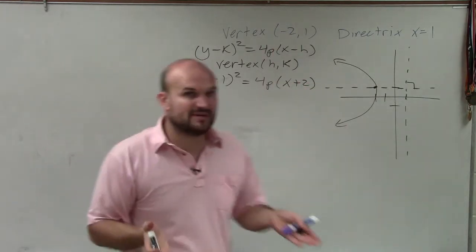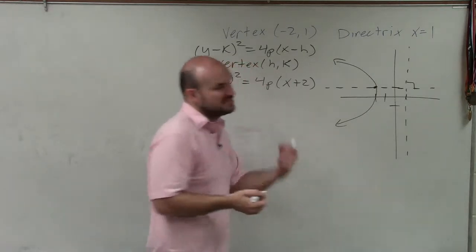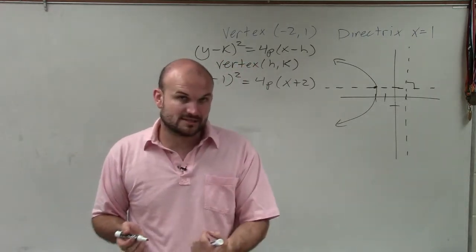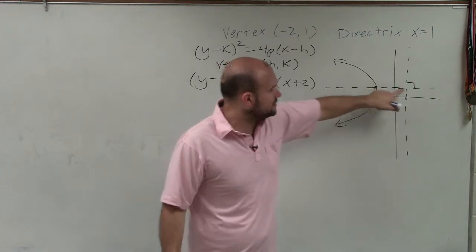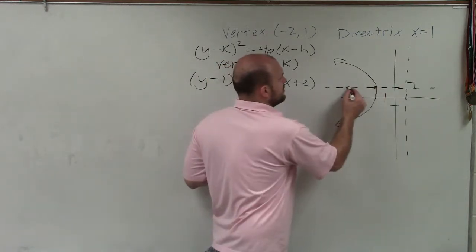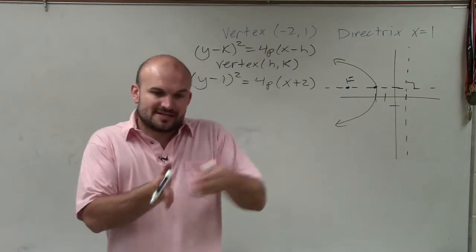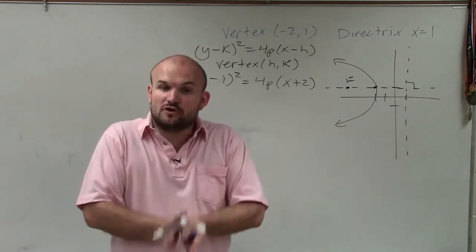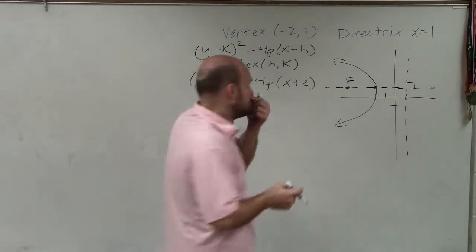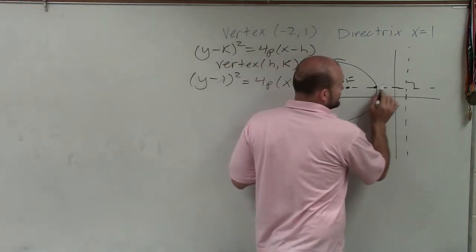Now we need to figure out what p is. Now, p is the distance from the vertex to the focus. And so if here's the directrix, I know the focus has to be somewhere right around here. Now, the absolute distance from the vertex to the focus is equal to the vertex to the directrix. So from the vertex to the directrix is 1, 2, 3.